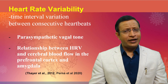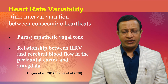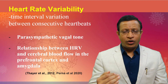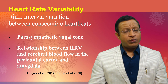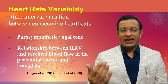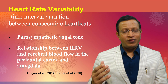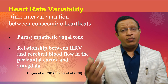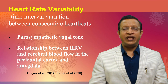Heart rate variability is the time interval variation between consecutive heartbeats. If there is stress outside, the heart rate should be able to go up, withstand, and then come down. The variation should be dependent on the outside environment and should be based more on parasympathetic vagal tone than sympathetic vagal tone. Sympathetic tone increases heart rate; parasympathetic tone decreases it. The relationship between heart rate variability and cerebral blood flow is a very important indicator for resilience — if HRV variation is high, cerebral blood flow is very good and the person is resilient.